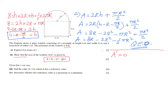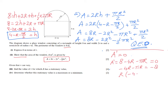Finding the derivative: dA/dr of 8r = 8, of −2r² = −4r, and of −½πr² = −πr (since π is just a number). Setting dA/dr = 0: 8 − 4r − πr = 0, so −4r − πr = −8, factorising gives r(−4 − π) = −8, thus r = −8/(−4 − π).